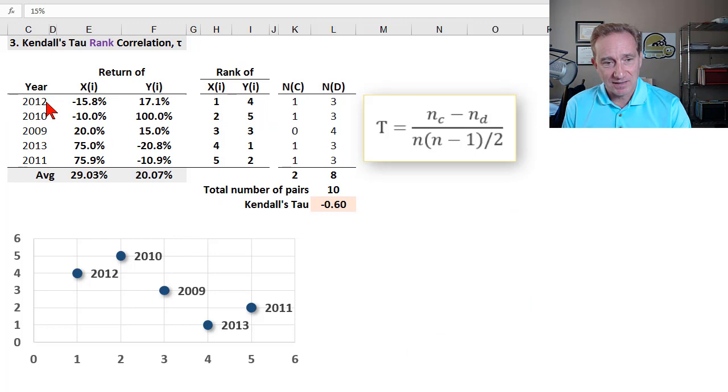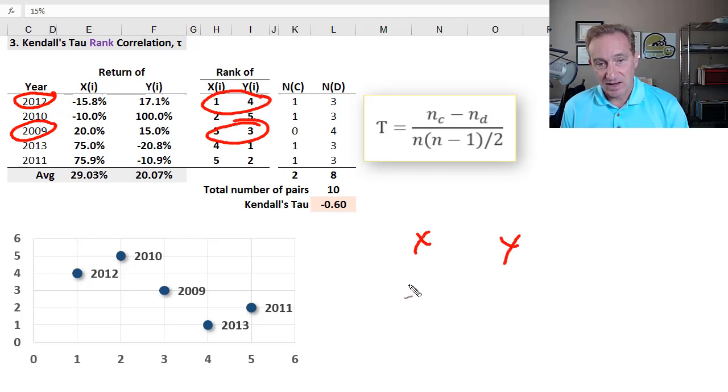Now let me look at 2012, compared to 2009. So that's this pair, compared to this pair. And so then we have one and four, three and three. So if we look at X, it's increasing. Three is greater than one, increasing here, however, Y changes and decreases, so to speak. Here, the three is less than four, and so this is a discordant pair.